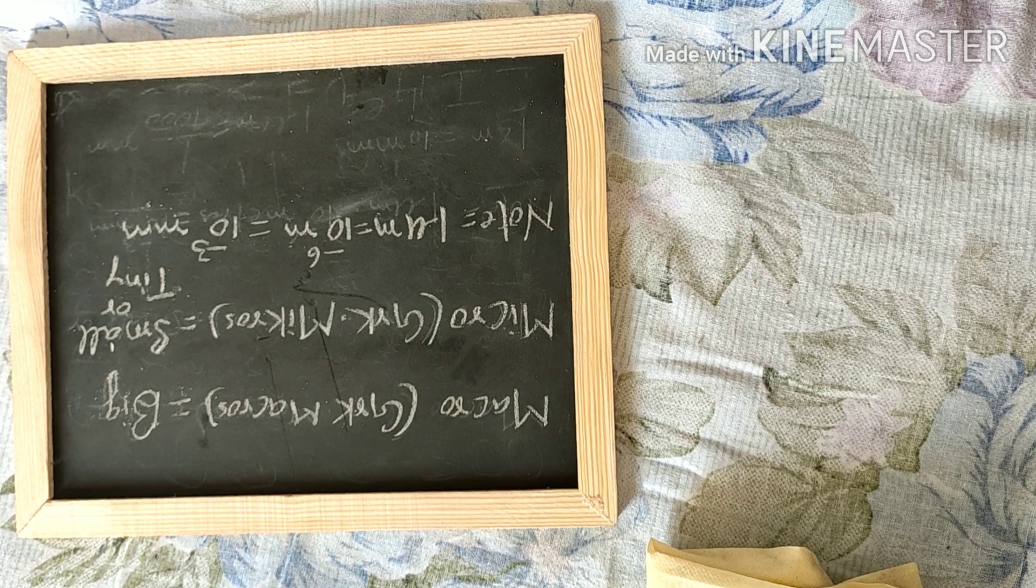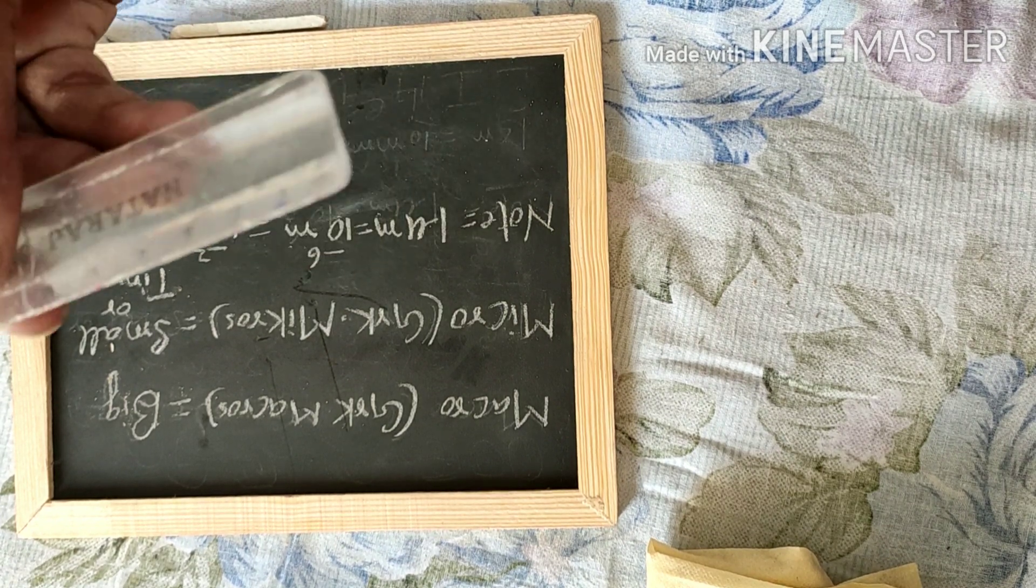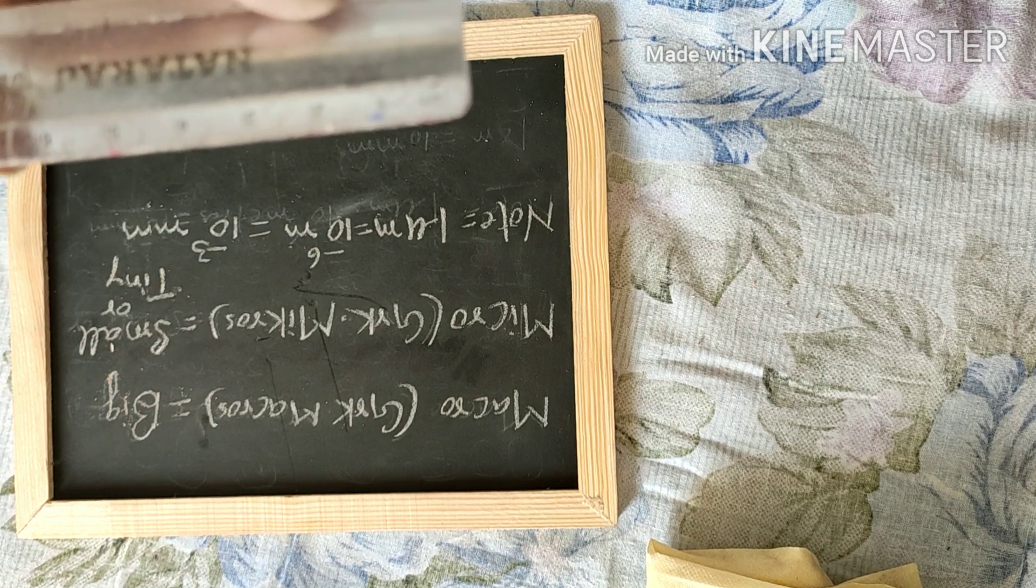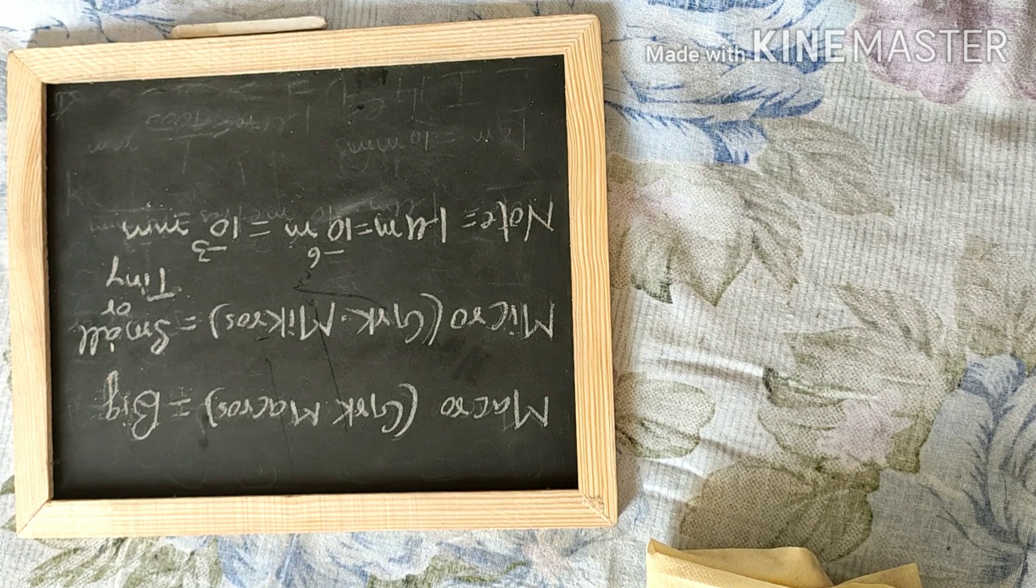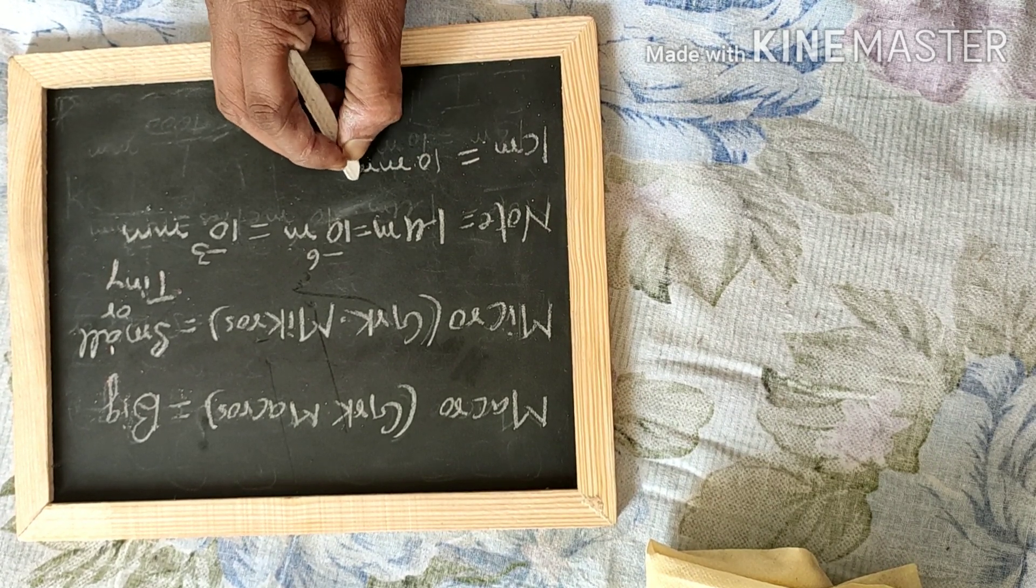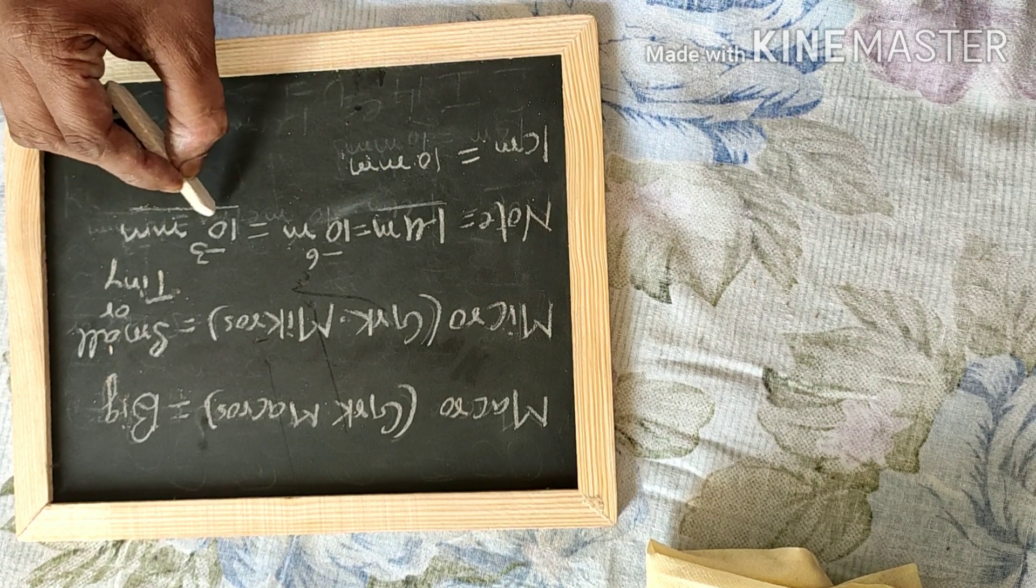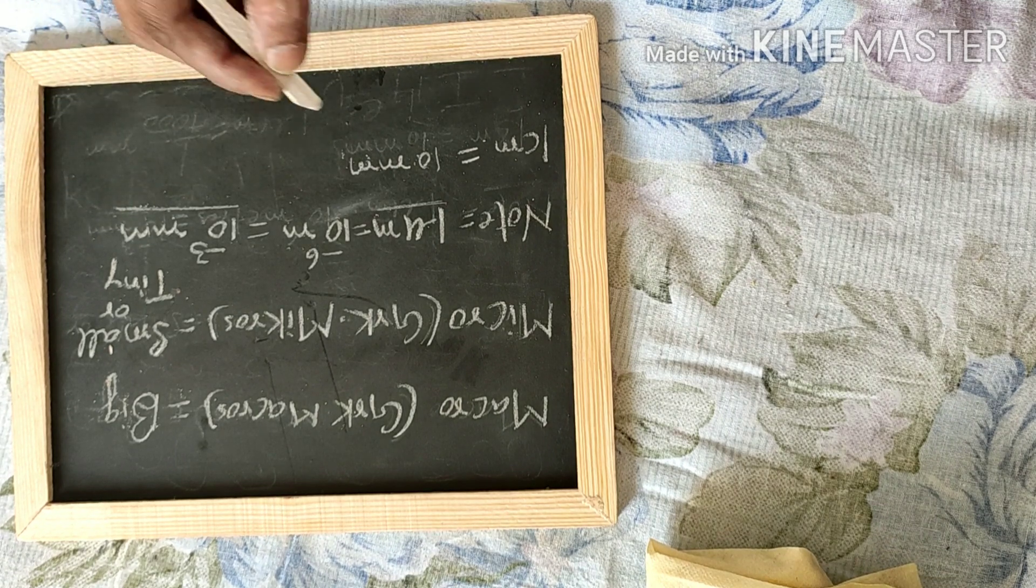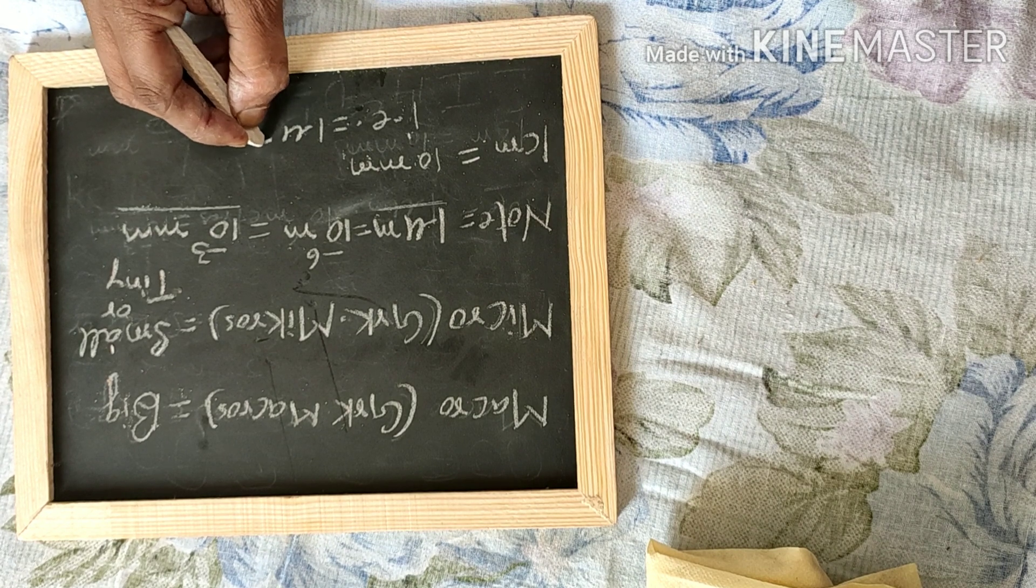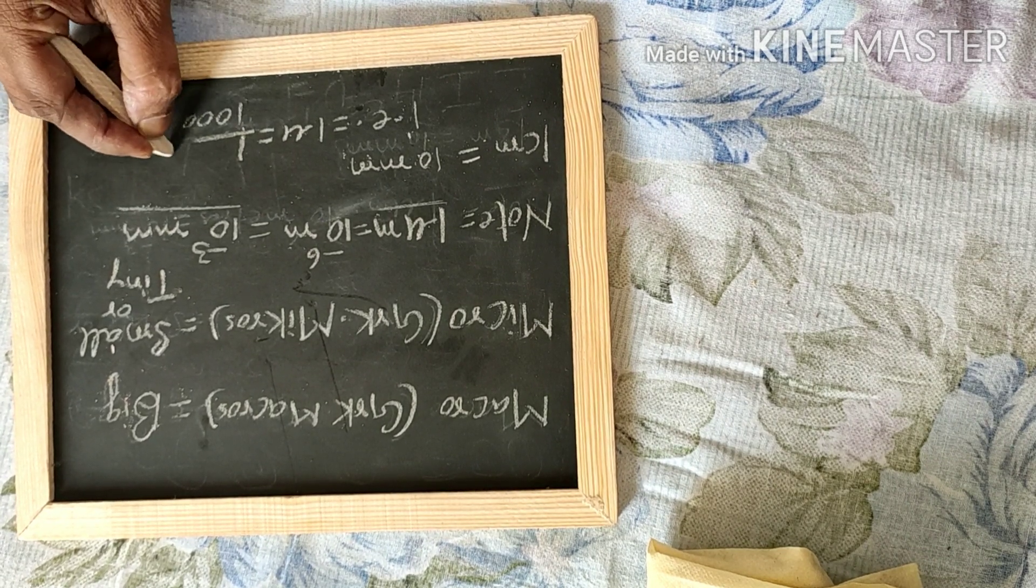Before defining the term microorganisms, I want to show you something. This is centimeter scale, you can see centimeter is written here. We know that one centimeter equals 10 millimeter. And here we see one micrometer equals 10^-3 millimeter. We can say one micrometer equals thousand part of millimeter.